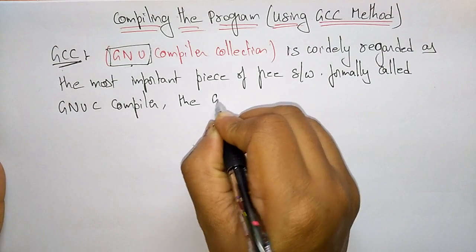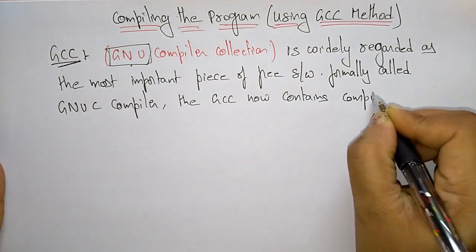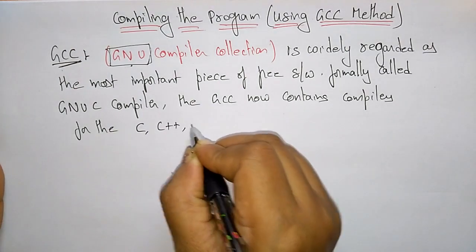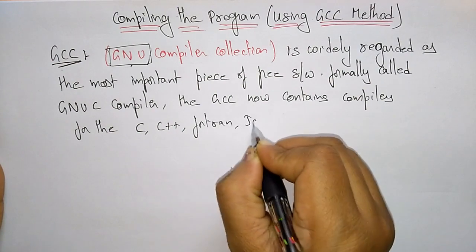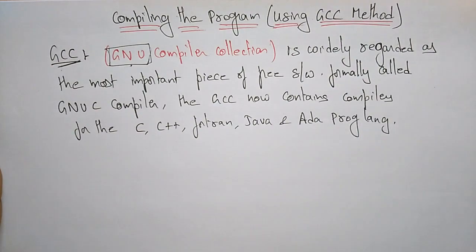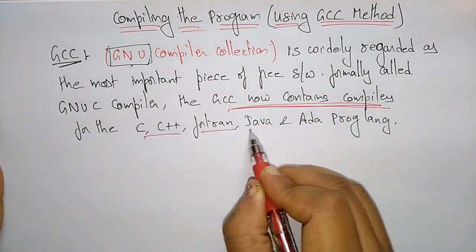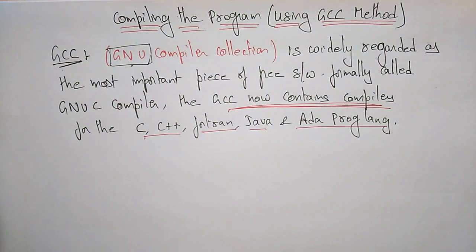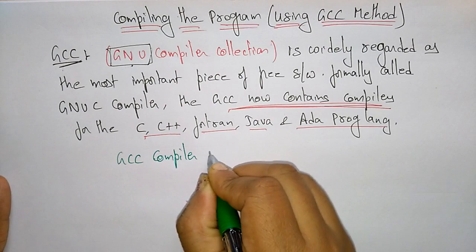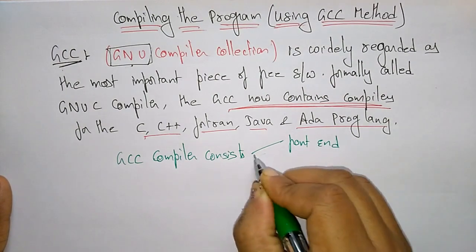GCC now contains compilers for C, C++, Fortran, Java, and other programming languages. The GCC compiler consists of a front-end, middle, and back-end.